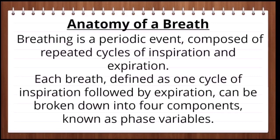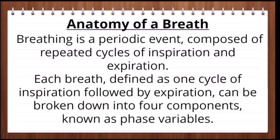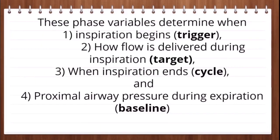Now the anatomy of the breath. Breathing is a periodic event composed of repeated cycles of inspiration and expiration. Each breath is defined as one cycle of inspiration followed by expiration, which can be broken down into four components known as the phase variables. These four phase variables are: first, trigger; second, target; third, cycle; and fourth, the proximal airway pressure during expiration, which is known as the baseline.